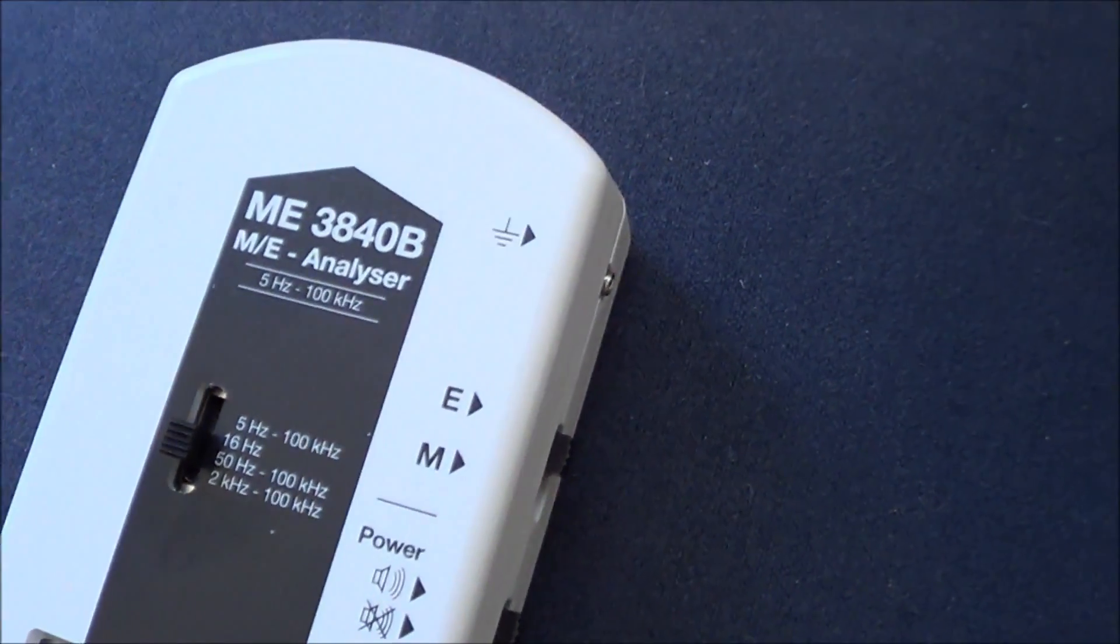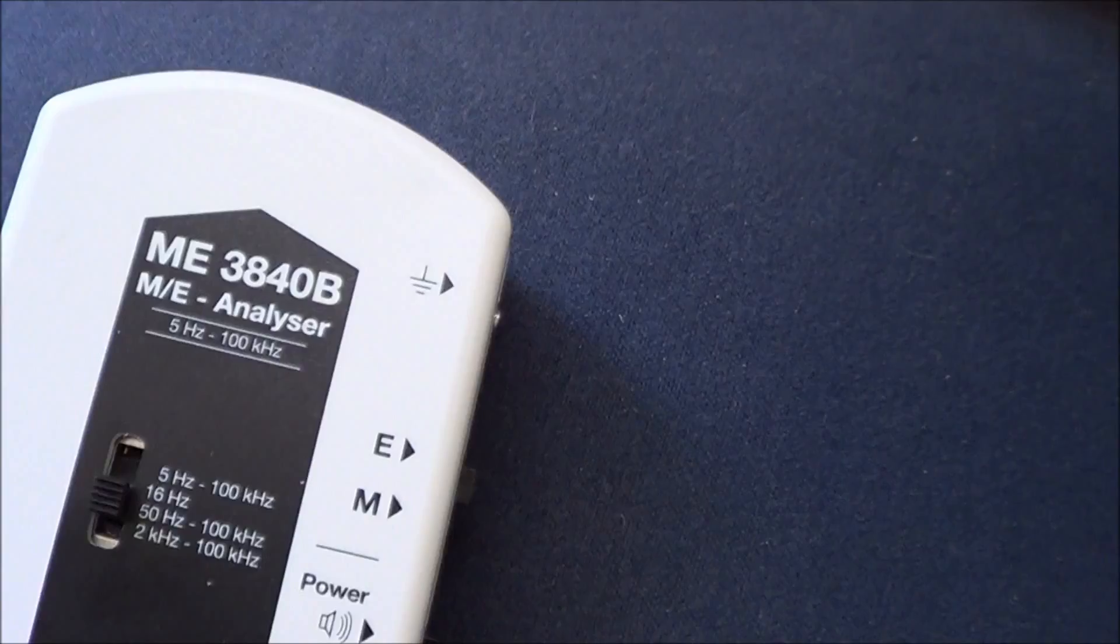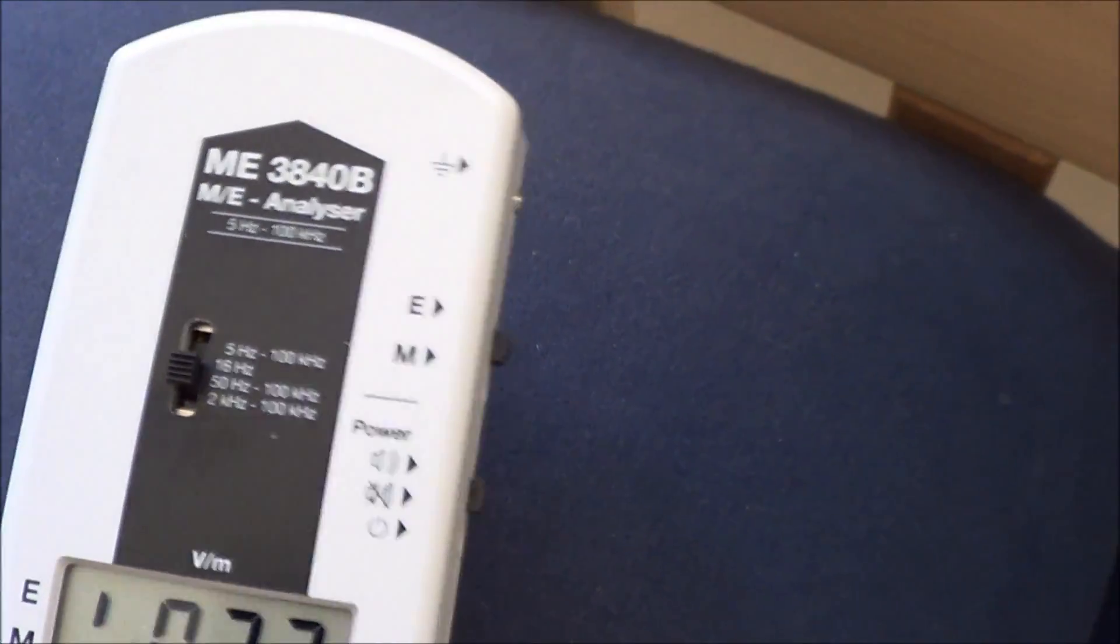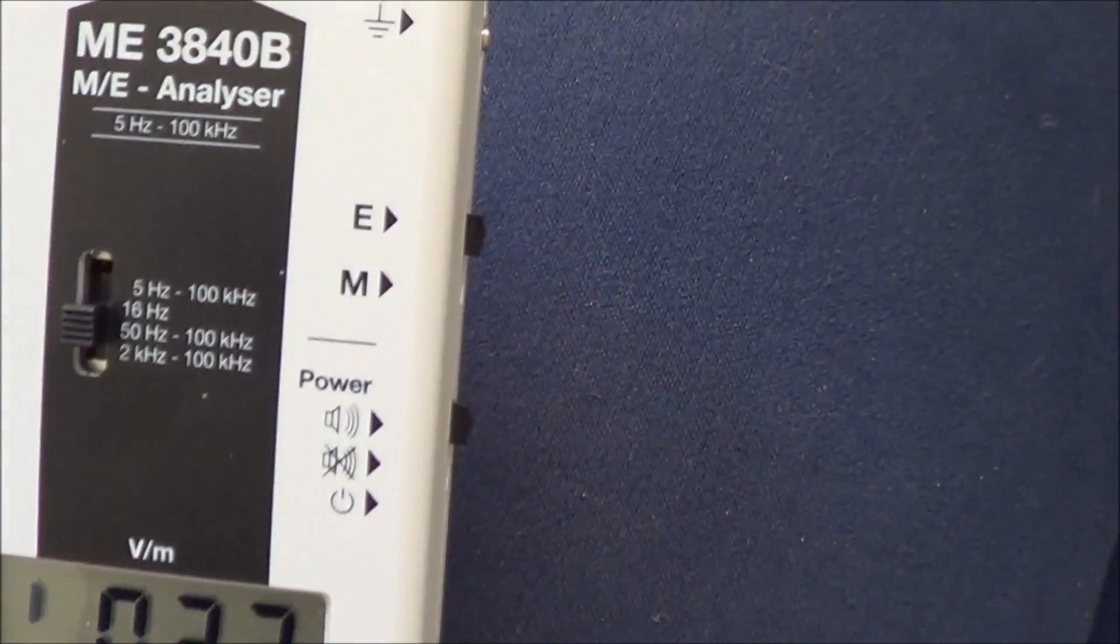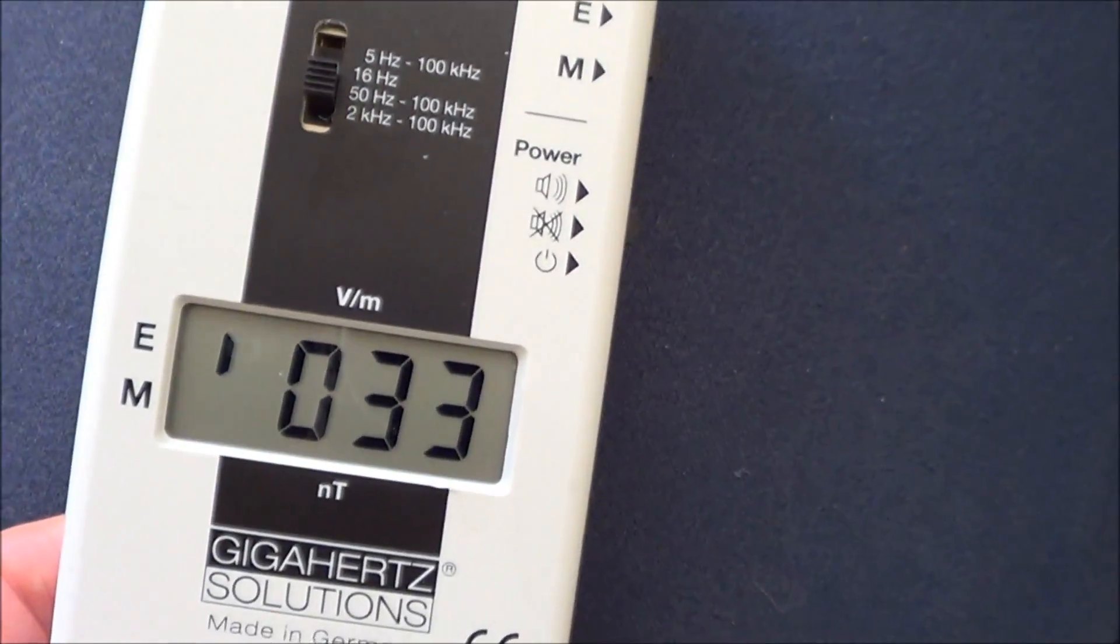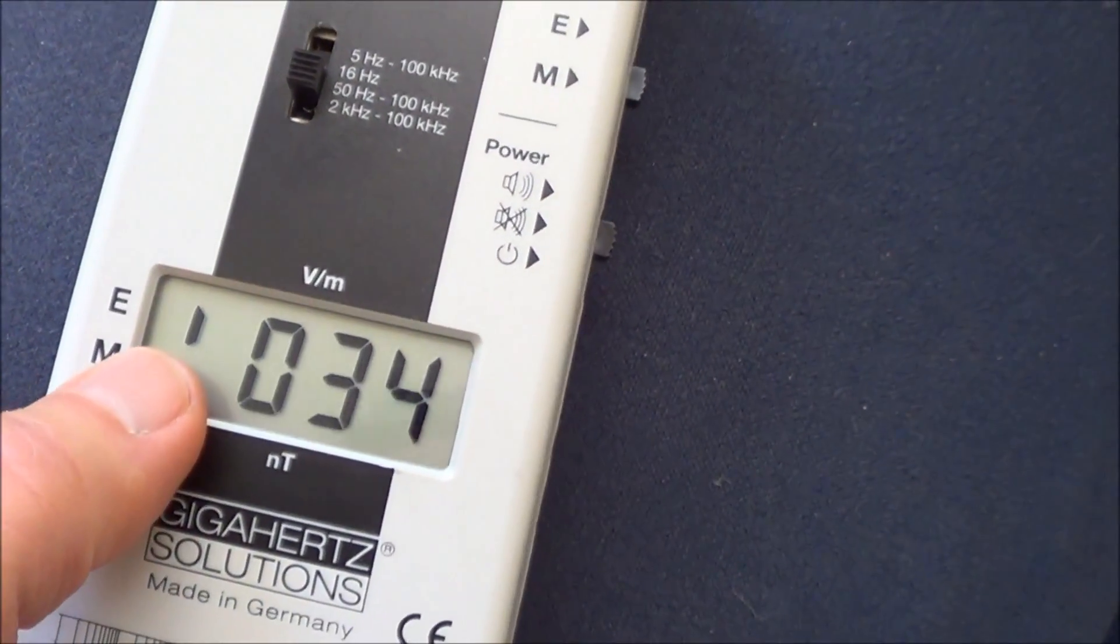is a GHz Solutions ME3840B meter, which measures electric and magnetic fields. Right now, I have it set to electric, and as you can tell, there's a little mark here next to the E.